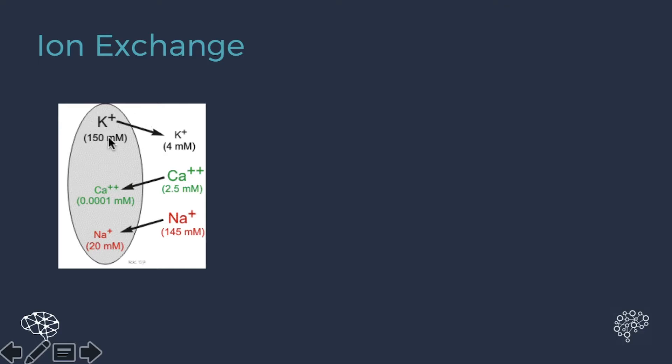So if you have a high amount of potassium inside the cell and a low amount of potassium outside the cell, that potassium is going to want out of the cell.